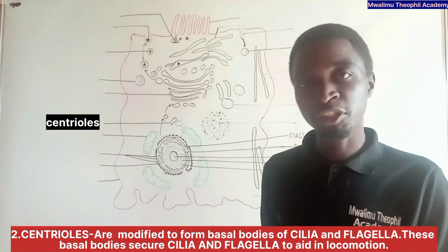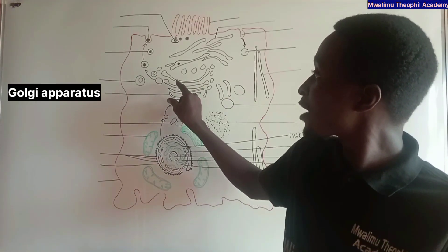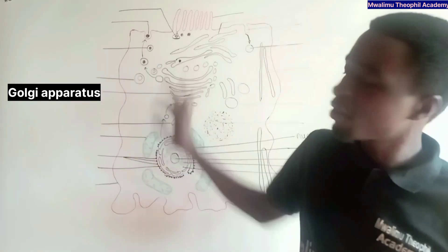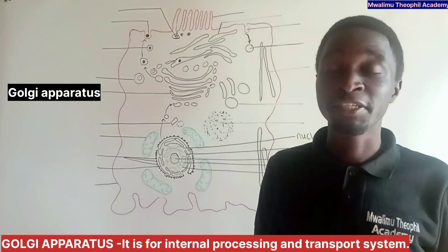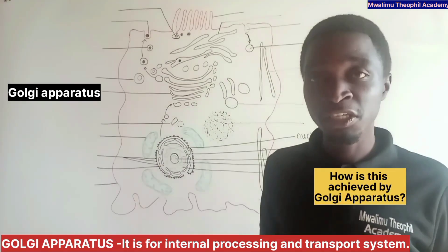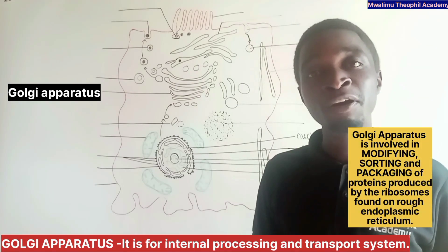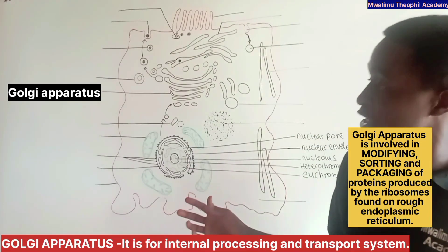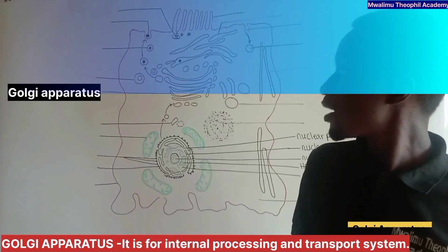These basal bodies secure cilia and flagella to aid in locomotion. These are the Golgi apparatus. The major role of the Golgi apparatus is internal processing and transport. The Golgi apparatus is involved in modifying, sorting, and packaging of proteins produced by ribosomes found on the rough endoplasmic reticulum.